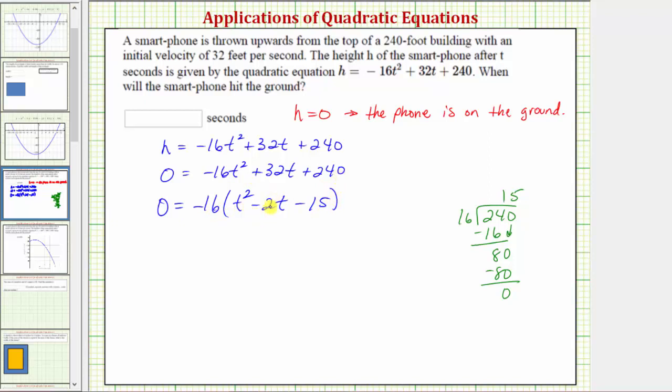Now the next step is to factor the trinomial inside the parentheses that has a leading coefficient of one. So if the trinomial factors, it'll factor into two binomial factors. And because the first term is t squared, we have a factor of t here and a factor of t here. To complete the factoring, we need to find the factors of negative 15 that add to negative 2, which would be negative 5 and positive 3. So we have t minus 5 and t plus 3.